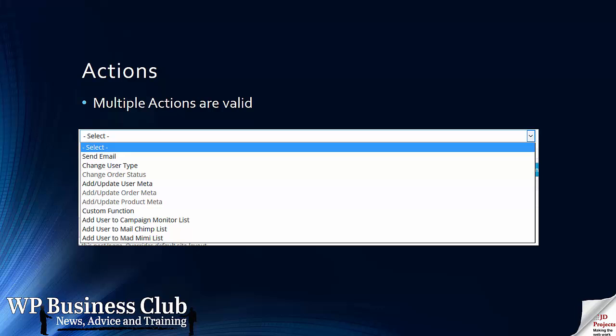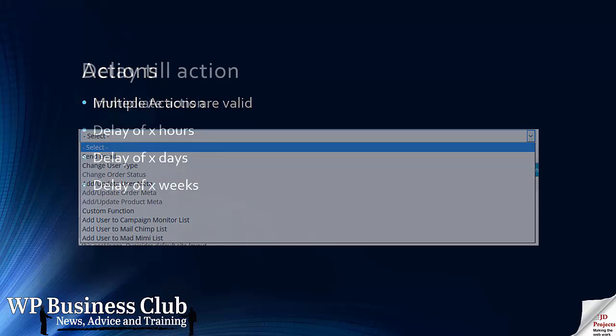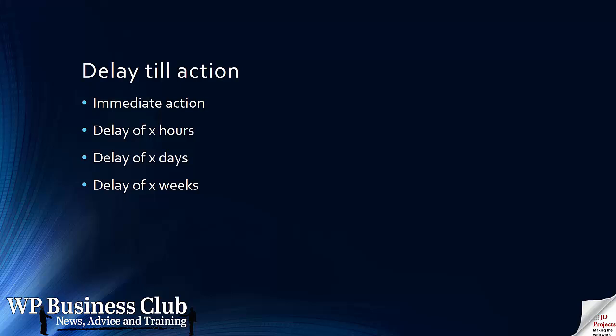Those actions can be: send an email, which is the one we use most; change the user type or the order status; add or update various parts of their product and metadata. We can also add them to three very popular email marketing applications. This can happen immediately, or we can have a delay of hours, days, or weeks. If you're doing a thank you email, you might want to do that pretty promptly. If you're doing an email asking if they want to refill for something, you may choose a certain number of weeks — it all depends on the situation.